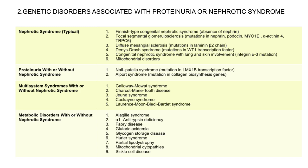Other genetic disorders associated with nephrotic syndrome or nephrotic range proteinuria include Nail-Patella syndrome, Alport syndrome, Galloway-Mowat syndrome, Charcot-Marie-Tooth disease, Joubert syndrome, Cockayne syndrome, and Laurence-Moon-Bardet-Biedl syndrome. Metabolic disorders associated with nephrotic syndrome include alpha-1-antitrypsin deficiency, Fabry disease, glutaric acidemia, glycogen storage disease, Hurler syndrome, partial lipodystrophy, mitochondrial cytopathies, and sickle cell disease.